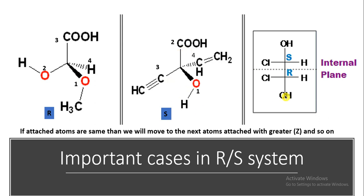Since RS nomenclature is absolute, we can assign R or S for each chiral center. Here, one position is R and another is S. Because of an internal plane of symmetry, this compound is a meso compound and is therefore not optically active.